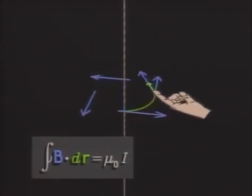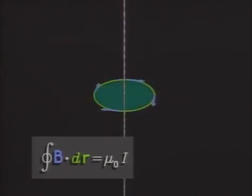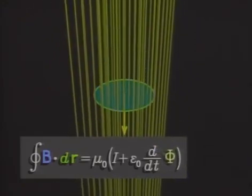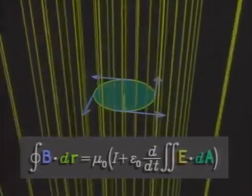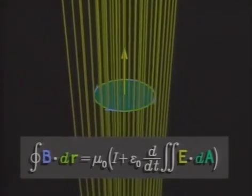In other words, the magnetic circulation around a closed path is given not only by the electric current through it, but also by the rate of change of electric flux through it. This was how James Clark Maxwell completed the laws of electricity and magnetism.